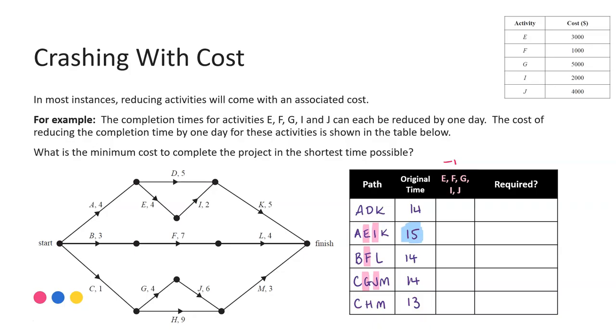So now going through and making those reductions. First pathway, no change, it remains at 14. Second pathway, I have two activities highlighted. So I can reduce by one for each of those, a total of two days saved. So 15 minus two brings me to 13. Third pathway, just the one activity being reduced there, again by one day. So 14 minus one, 13. Fourth pathway, we have two activities. So again minus two brings that to 12. And the final pathway, no reductions, so that remains at 13.